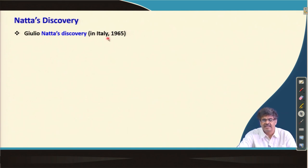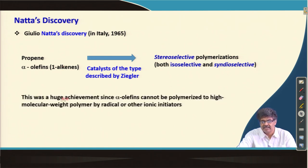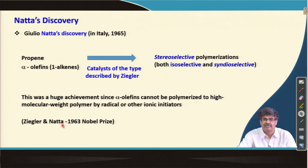Later, Natta in Italy used a similar catalyst system, but instead of ethylene he showed it can be used for alpha-olefins like propylene. Using the same catalyst described by Ziegler, he succeeded in obtaining stereoselective polymerization — both isotactic and syndiotactic. This was a huge achievement since alpha-olefins cannot be made into high molecular weight stereoregular polymers by radicals or ionic initiators. As a result, Ziegler and Natta were jointly awarded the Nobel Prize in 1963.